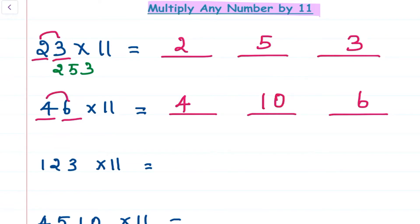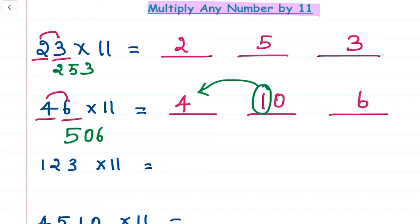Since we have a two-digit middle value, the carryover will be added to the previous digit. So our answer is 506: we write 6, then carry 1 to add to 4, giving 5. The answer is 506.